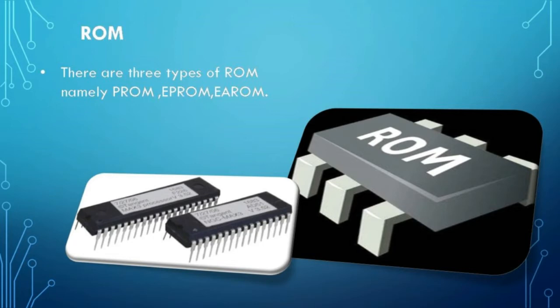EP-ROM, that is erasable programmable read-only memory. In EP-ROM we can erase the program already stored in this chip and later a new program can be programmed on the same chip. It can be erased by removing the chip from the circuit board and exposing it under ultraviolet rays for a few minutes. The program in EP-ROM is permanent in nature until it is erased and hence it is non-volatile. EA-ROM, that is electrically alterable read-only memory, is similar to EP-ROM except that it can be reprogrammed without removing the chip from the circuit board — it can be reprogrammed electrically in a matter of milliseconds. The advantage of EA-ROM is that it can be reprogrammed partially or completely, which is not possible in the case of EP-ROM.